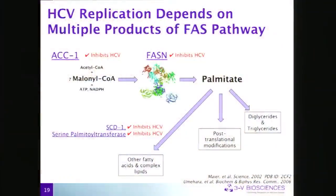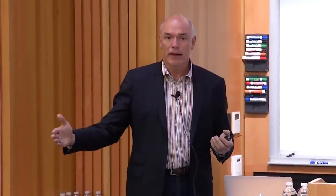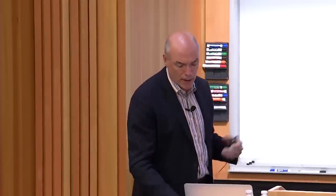We also looked at the whole fatty acid synthesis pathway. ACC1 inhibitors block HCV replication. Serine palmitoyltransferase, downstream of palmitate, does the same. SCD1, a desaturase that converts palmitate to a 16:1 or 18:1 fatty acid, also inhibits HCV. When we saw that last one, we blocked FASN and added back the SCD1 product — the 16:1 fatty acid — and the block remained. So we need not just the 16:1, but the palmitate itself, plus likely those post-translational modifications. One drug hits this virus in multiple places.